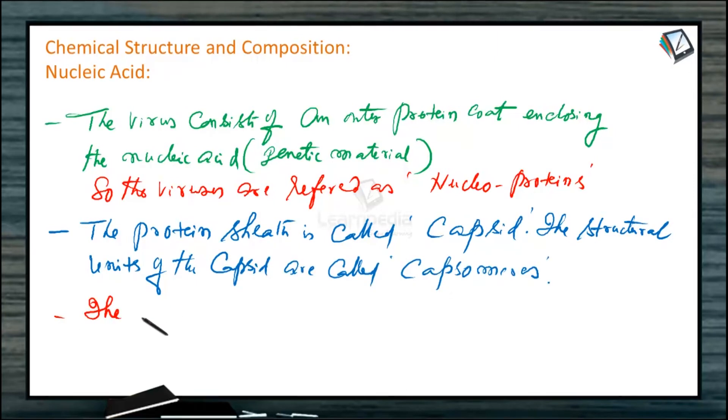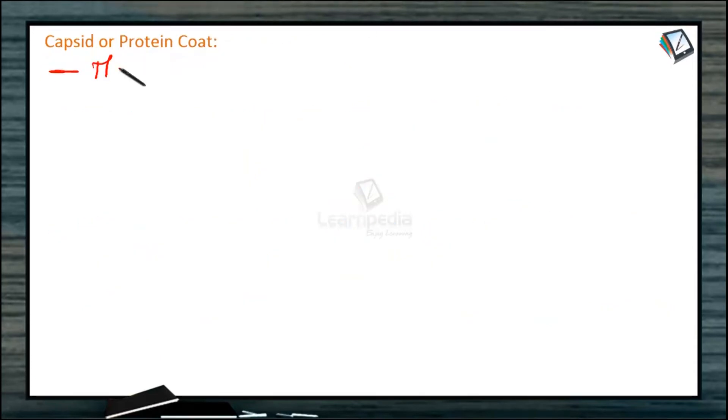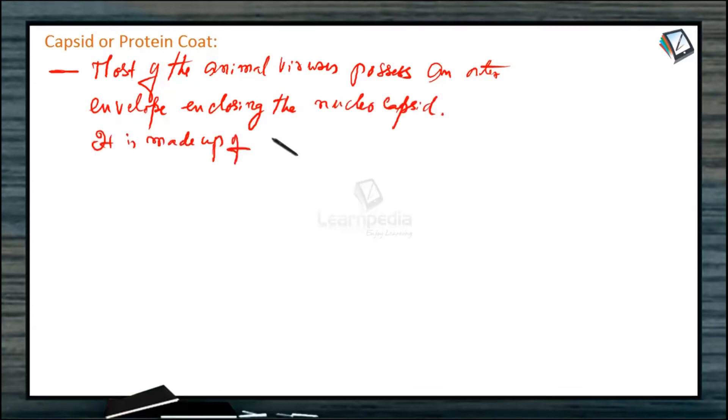The enclosed nucleic acid may be either DNA or RNA, but never both are present. Most of the animal viruses possess an outer envelope enclosing the nucleocapsid. It is made up of lipids, proteins, and carbohydrates. It is called peplos and its subunits are called peplomeres.